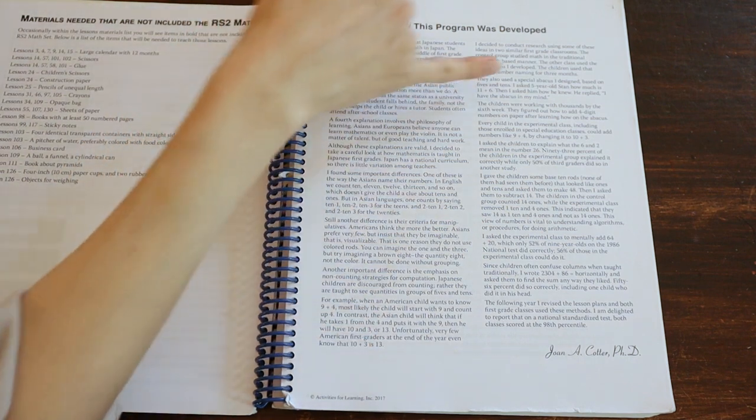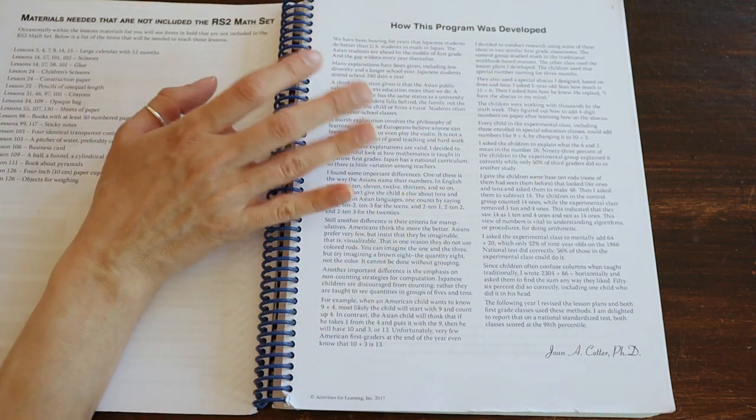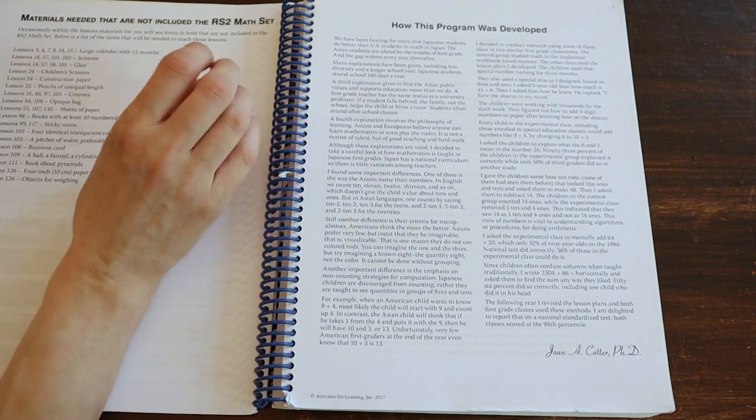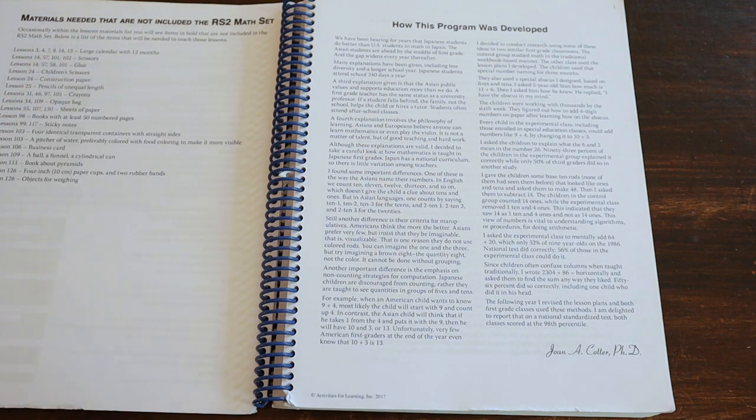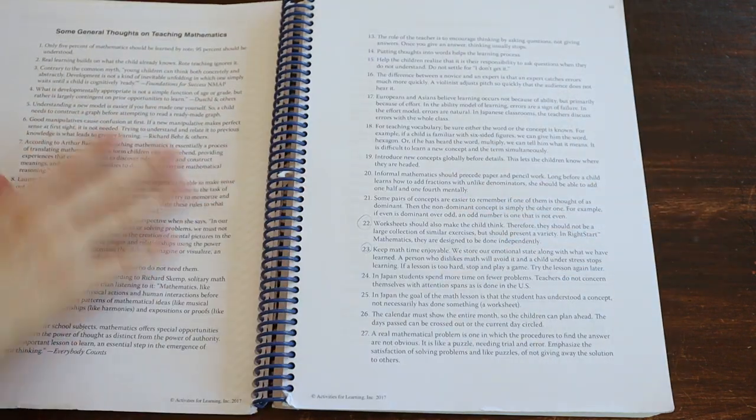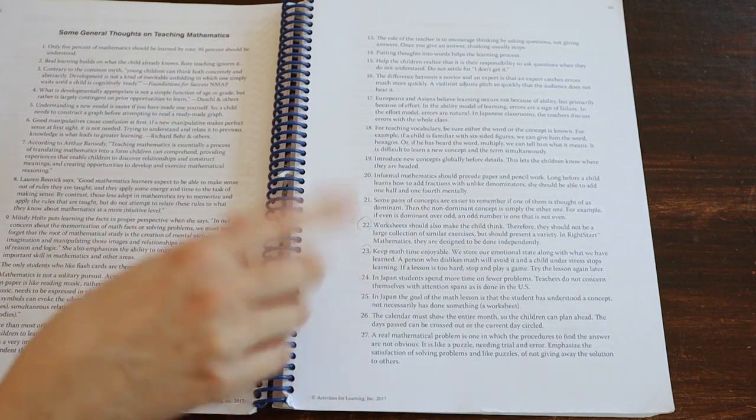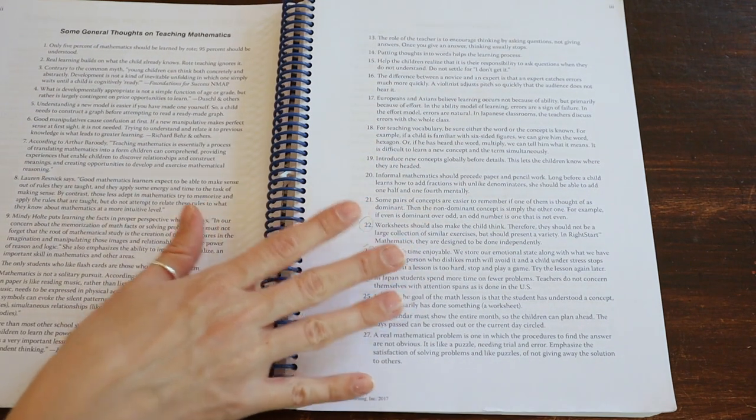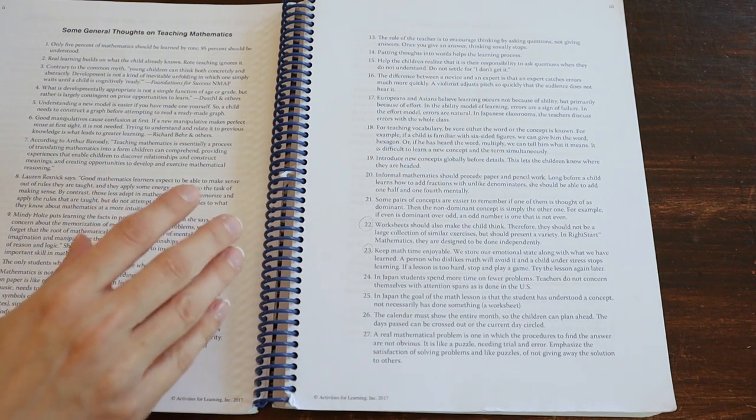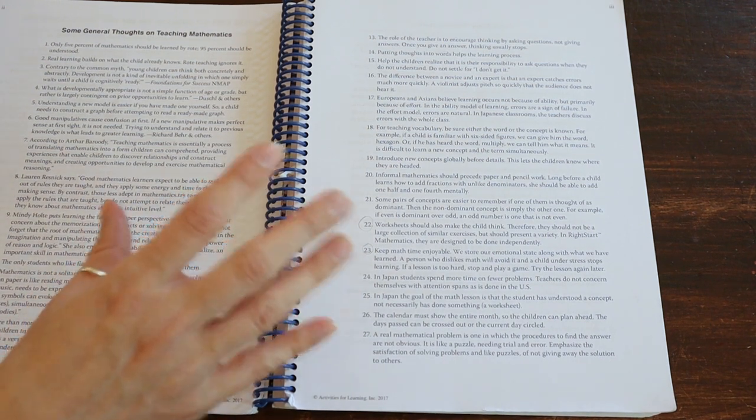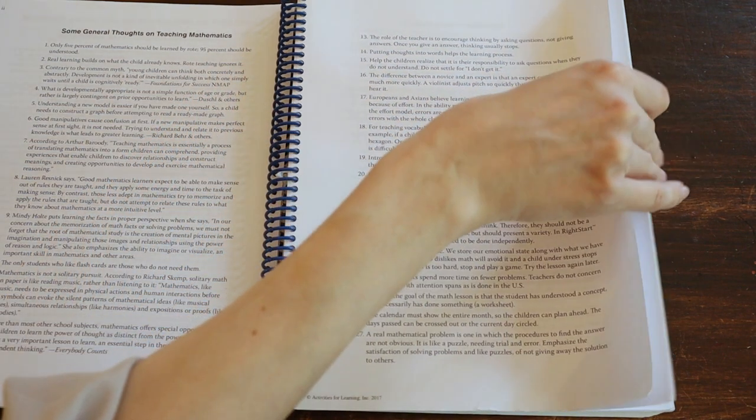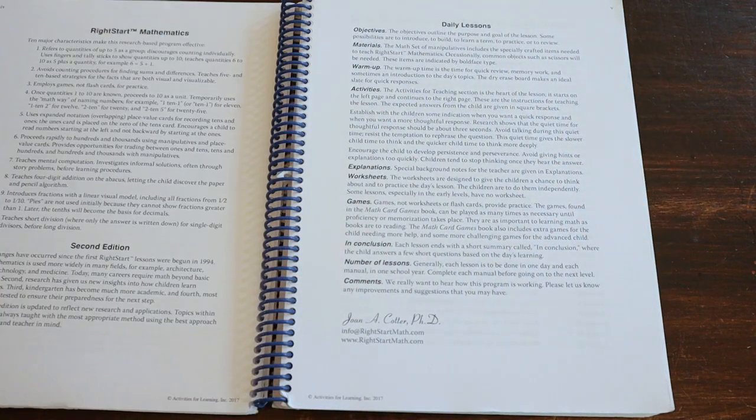Here is Joan Cotter's essay about what she thought, how she came up with this program. This details out 3107, talks about numbers. It's well worth the read. It's also available on their website to read. Here are some general thoughts about teaching math. This is excellent. I love this. And this is also, I think available on their website. So even if you are not using right start math, I would absolutely read this anyway, just to help you teach math. It's just really smart.